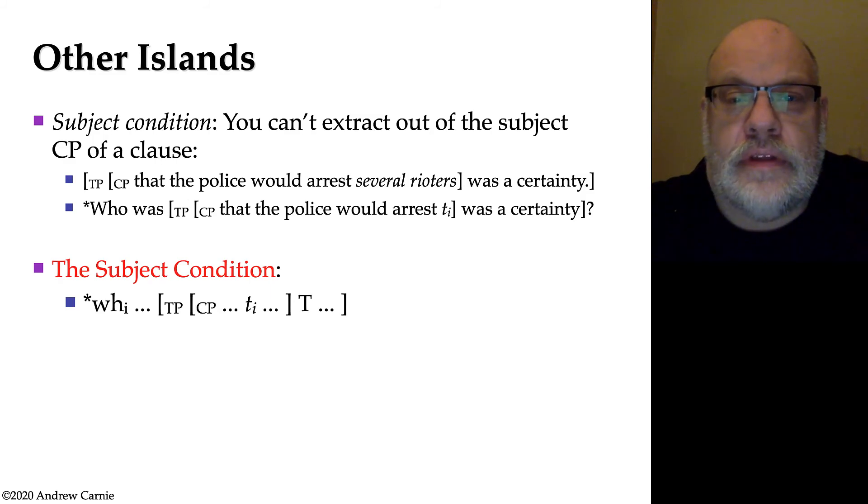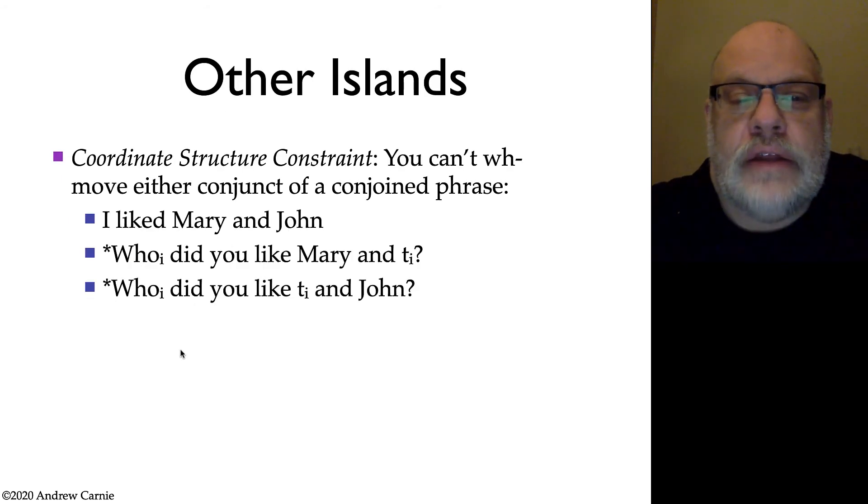Now there are many other kinds of islands that Ross identified. He identified one called the subject condition. And the subject condition says that if you have a CP in the subject position of a clause, you can't do WH movement out of that. So take the sentence that the police would arrest several rioters was a certainty. The CP that the police would arrest several rioters sits in the subject position of the clause was a certainty. You cannot do WH movement out of that CP that's in subject position. So you can't say who was that the police would arrest was a certainty. It's just terrible. That's where we've done movement of who out of that position. This is stated as the subject condition. It's restated just here in terms of abstract categories and brackets. If you have a CP that's in the specifier of a TP, then it follows that there's no movement out of that position.